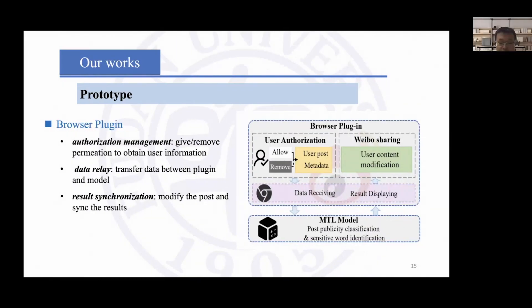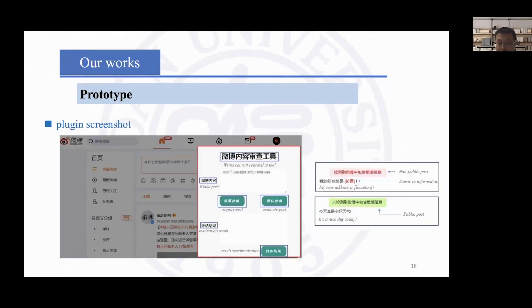After building the model, we designed a prototype — a browser plug-in-based content censorship tool. The tool transports data between the plug-in and the model server and shows the censorship results for users. We use the green style to tell the user that the post is evaluated as public; the red color means the post is non-public.